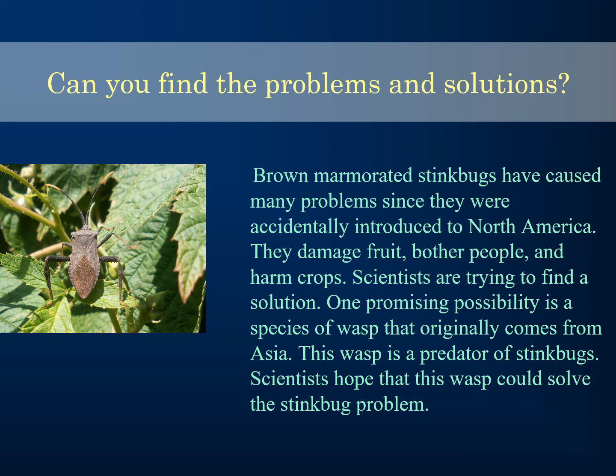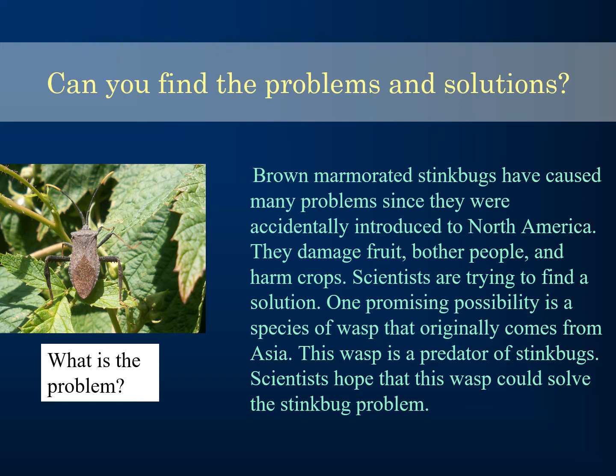Let's look at another example — stink bugs: 'Brown marmorated stink bugs have caused many problems since they were accidentally introduced to North America. They damage fruit, bother people, and harm crops. Scientists are trying to find a solution. One promising possibility is a species of wasp that originally comes from Asia. This wasp is a predator of stink bugs. Scientists hope that this wasp could solve the stink bug problem.'